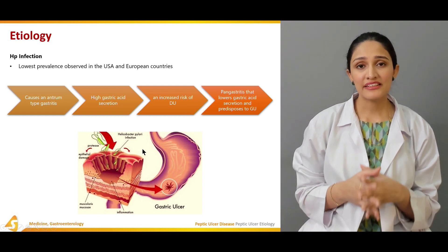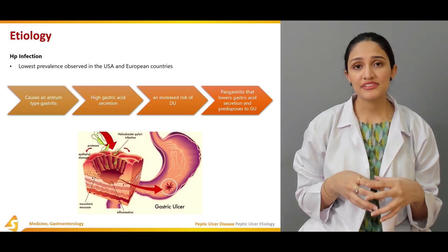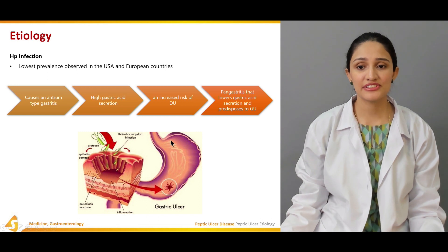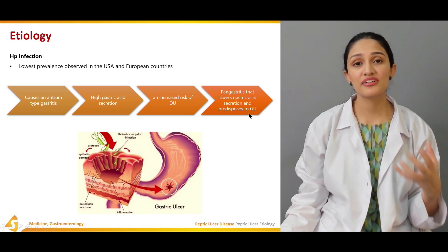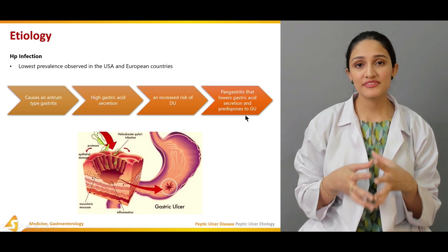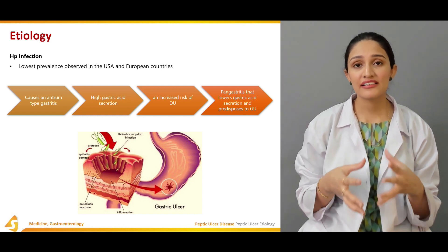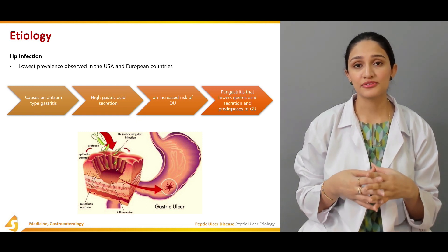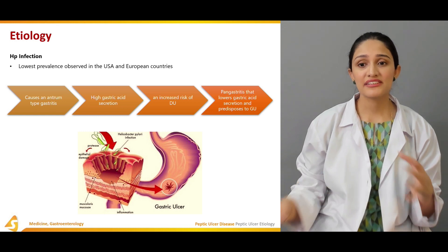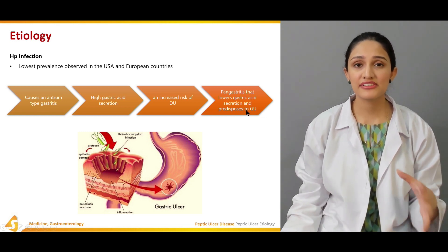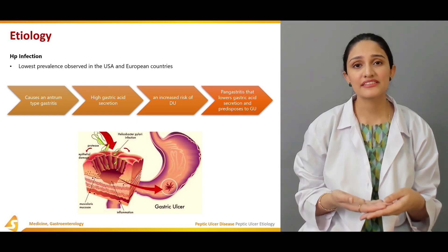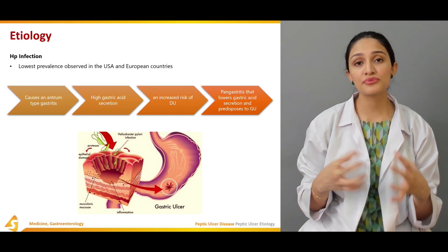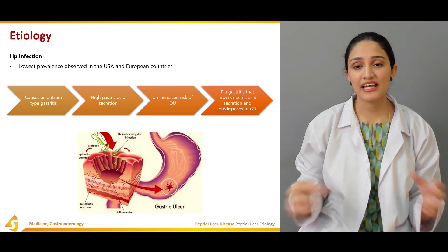In contrast, pangastritis involves both the antrum and the fundal part of the stomach. It causes lower gastric acid secretion, which predisposes to more gastric ulcers. Normally, a high amount of acid in the stomach prevents gastric ulcers from occurring, but in pangastritis there is a decrease in gastric acid, making the stomach mucosa more prone to develop gastric ulcers.